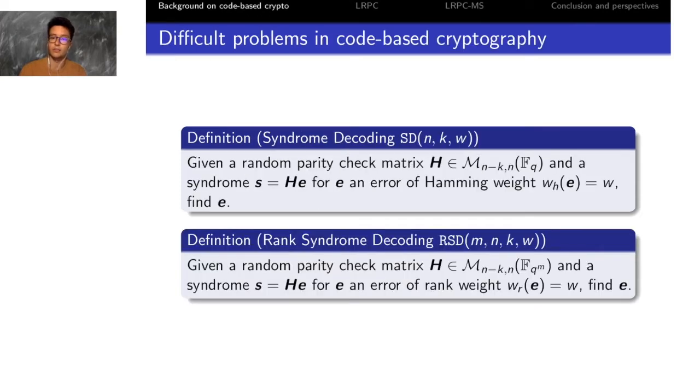If we do cryptography with error correcting codes, we need difficult problems. The difficult problem in coding theory is the syndrome decoding problem parametrized with parameters n, k, and target weight w. For this problem we are given a random parity check matrix and a syndrome that is generated with an error of weight w, and the objective is to recover the coordinates of the errors.